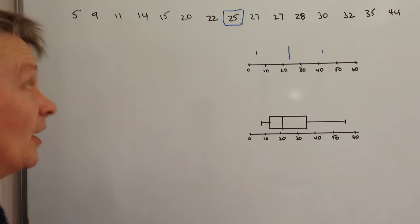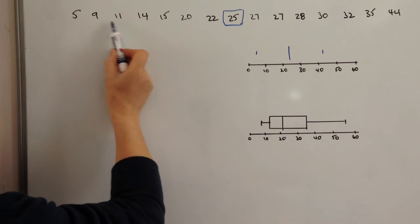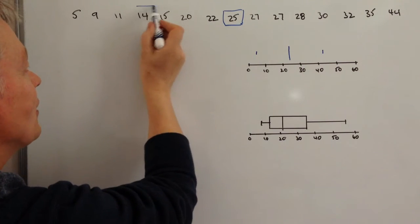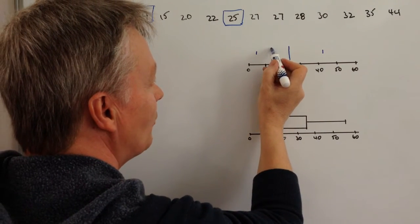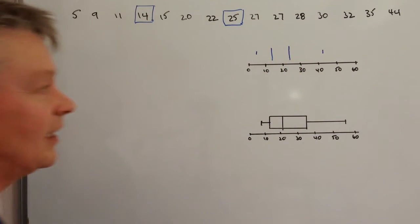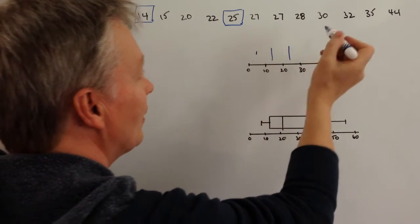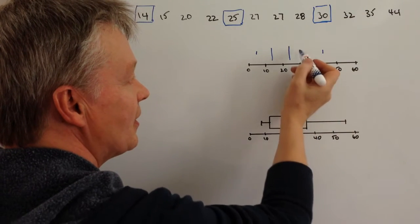OK, and then we've got the lower quartile person. Well, that's halfway between these. So you've got 1, 2, 3, 4. 1, 2, 3, 4. So that's going to be number 14 there. So the lower quartile will be 14. And then the upper quartile is going to be the person in the middle, which is actually that person there at 30 seconds.